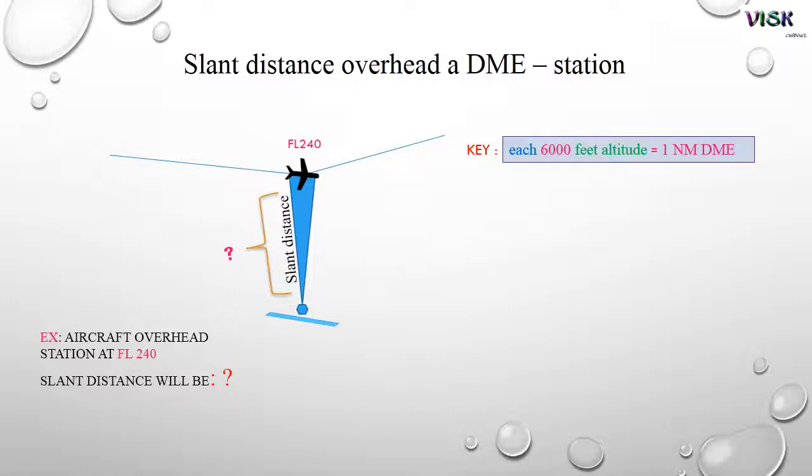Follow the example. Aircraft flyover station at flight level 240. Slant distance will be flight level 240 or 24,000 feet divided by 6000 equals 24 divided by 6 equals 4.